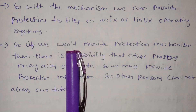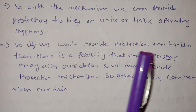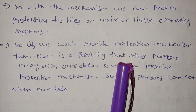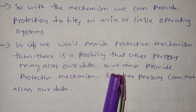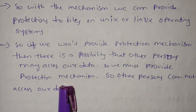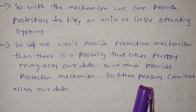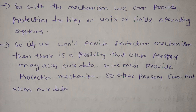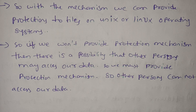If we do not provide a protection mechanism, then there is a possibility that other persons may access our data. So we must provide the protection mechanism so that other persons cannot access our data.